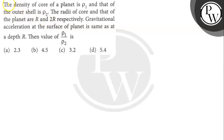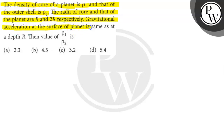Let's read the question. The question says: the density of the core of a planet is rho 1 and that of the outer shell is rho 2. The radii of the core and that of the planet are r and 2r respectively. The gravitational acceleration at the surface of the planet is the same as at a depth r. Then the value of rho 1 divided by rho 2 is how much?